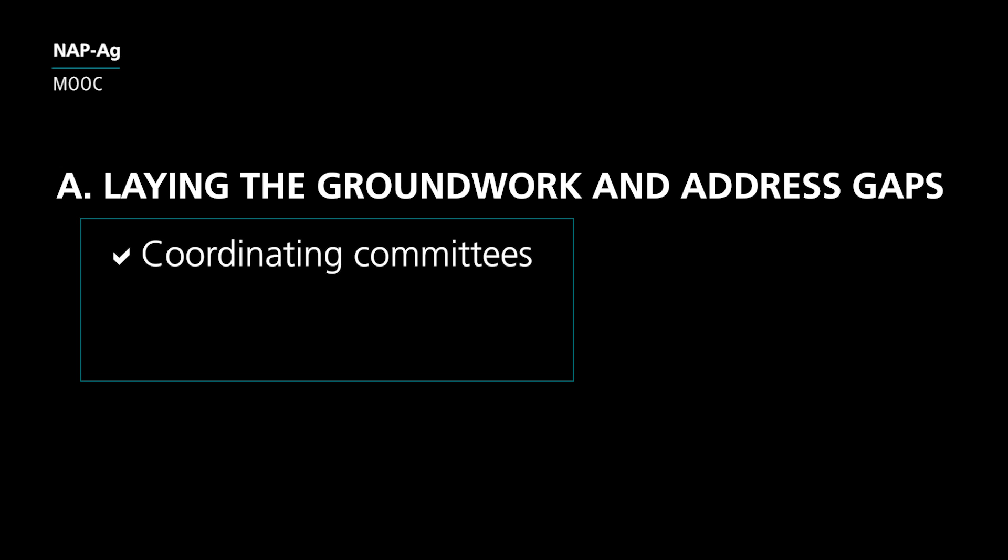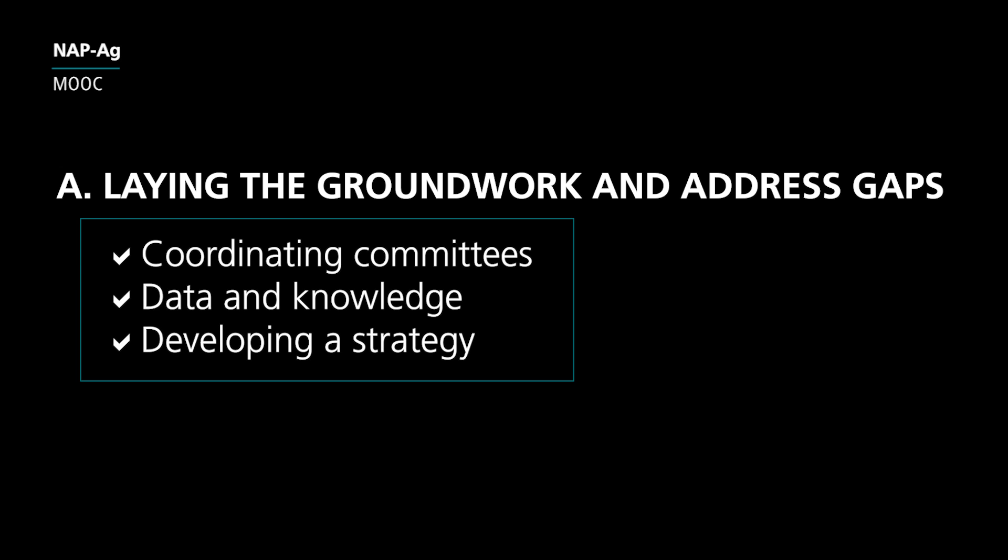The goal of the first element, element A, is to launch the NAP process. Here, governments may have to create a mandate for the NAP process and establish clear rules and coordination mechanisms for ministries and key stakeholders. At this stage, it is important to consider what would be needed for a country to start the national adaptation planning cycle — what adaptation activities are already being implemented, and what are the gaps in capacity, information and resources. In practice, example outputs from this stage could be establishment of coordinating committees, a synthesis of available data and knowledge, and a strategy or roadmap for the NAP process.